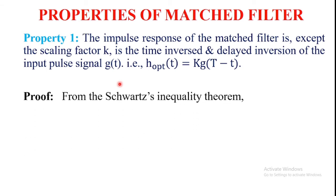From the Schwarz inequality theorem we know that φ₁(x) = k · φ₂*(x). Here we consider φ₁(x) as the frequency response of the filter, that is H_optimum(f), and φ₂(x) is taken as G(f).